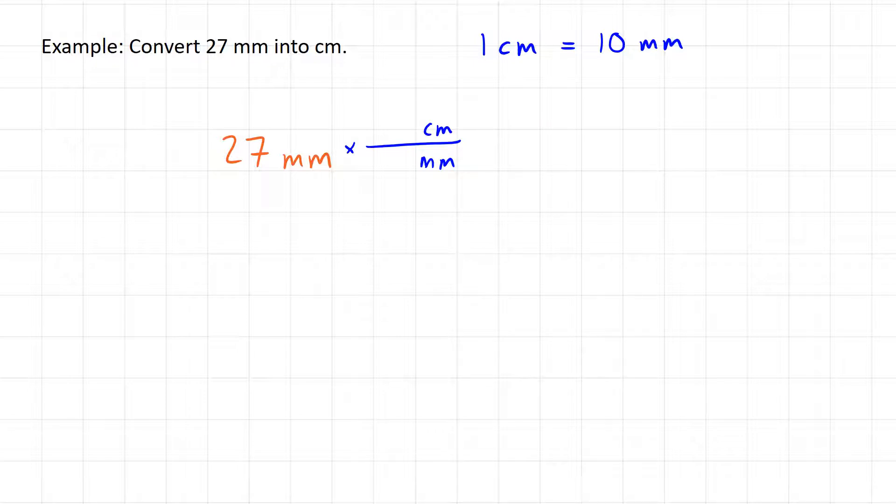So I have millimeters on the bottom, centimeters on top, and now I make sure I put these numbers in the right spot: 1 centimeter for every 10 millimeters. So I'm multiplying 27 millimeters by this fraction of 1 centimeter per 10 millimeters.